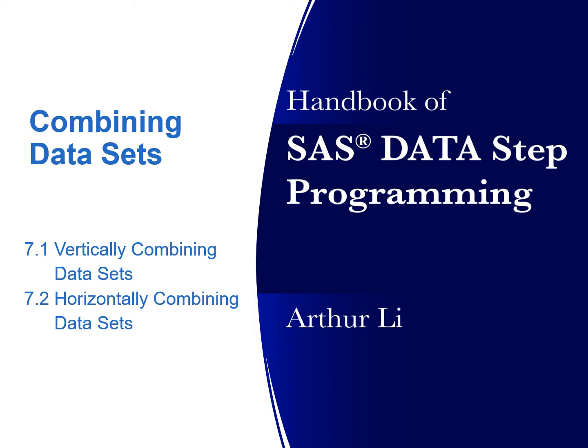In a situation where observations are from a different source, the data needs to be combined vertically. On the other hand, when variables are from a different source, the data needs to be combined horizontally.